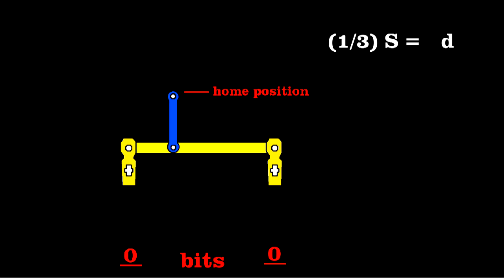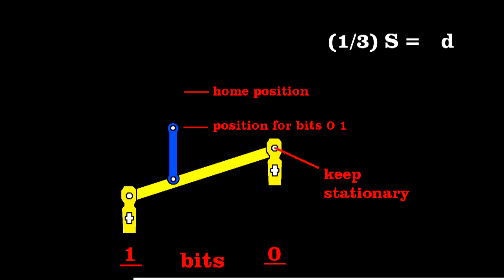To encode bits one-zero, keep the right pivot fixed and pull on the left tab. You can again find the distance that blue bar moved using similar triangles. It's two-thirds of the stroke length s, or in our notation, 2D. We'll call that position two.